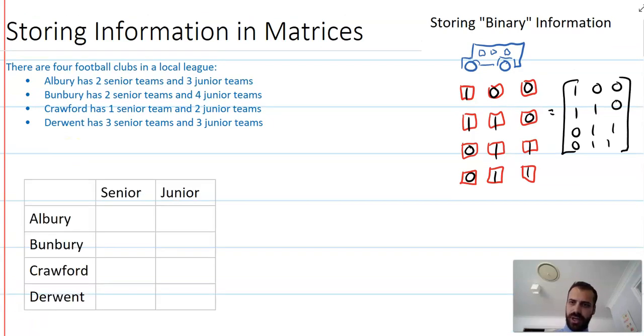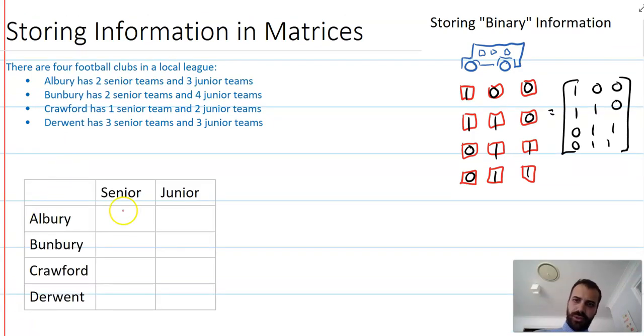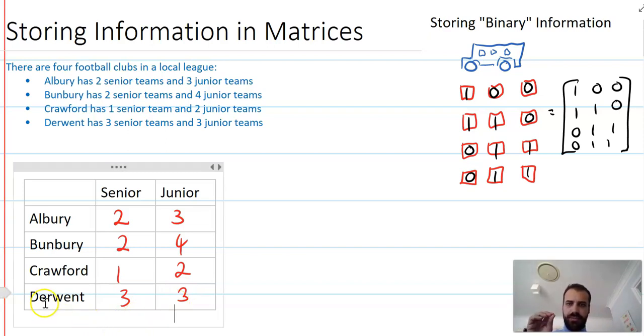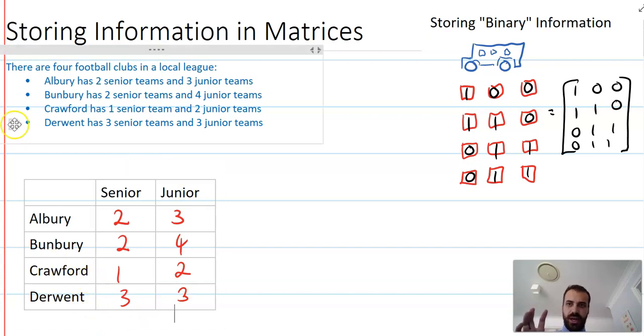Hopefully you've come up with a table that looks like this: Albury has two senior teams and three junior teams, Bunbury has two seniors and four juniors, Crawford has one and two, and Derwent has three and three. Now we can keep that information - you can see that's a much neater way of displaying that information than that, but not only is it a better way of displaying it.